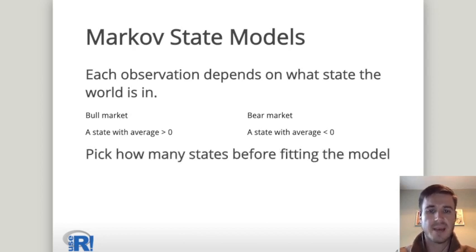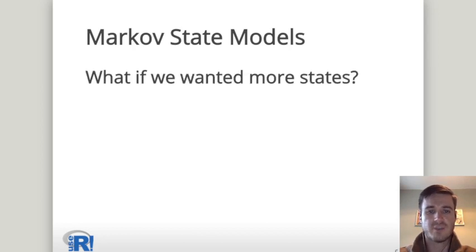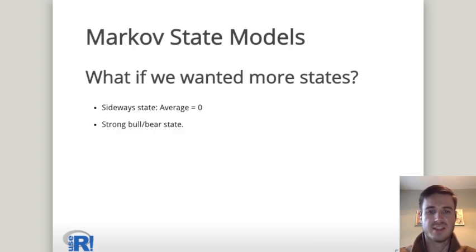You need to pick how many states there are before fitting the model, so if you want to add more states this can be a bit of a problem. For example, you might want to include things such as a sideways state where the average is equal to zero, or maybe a strong bull or strong bear state where the average values are a lot larger.